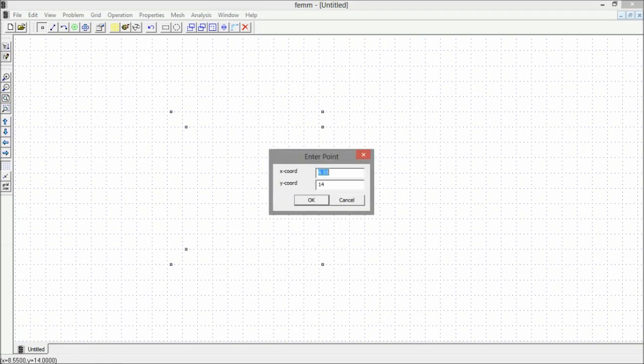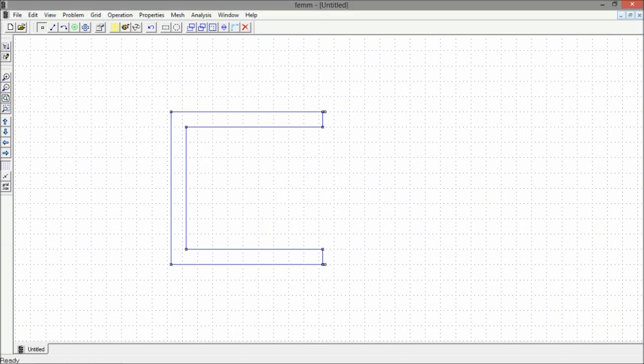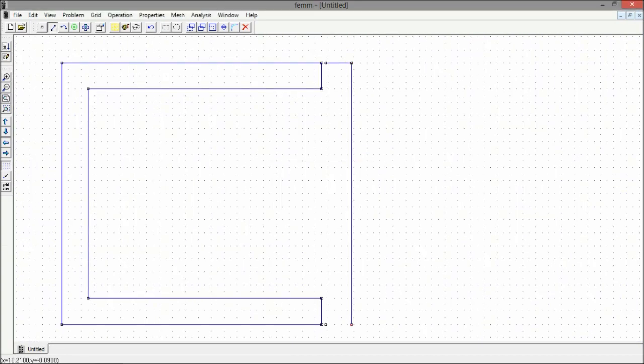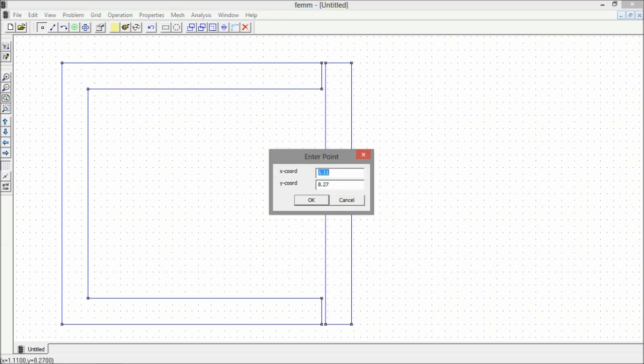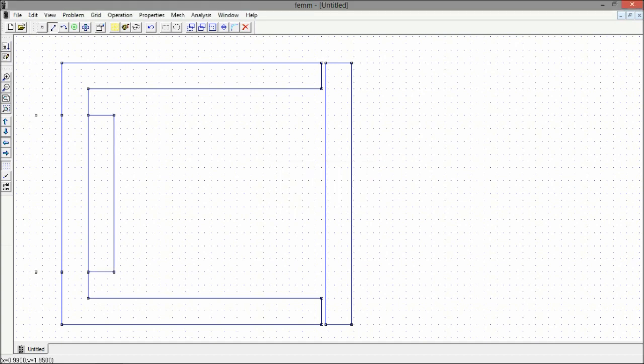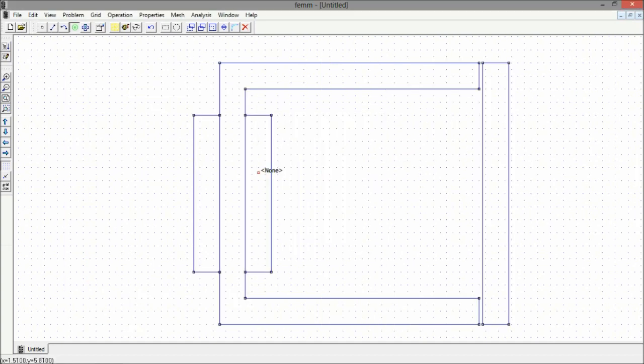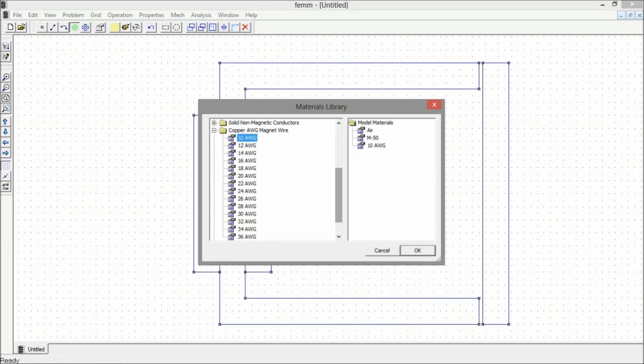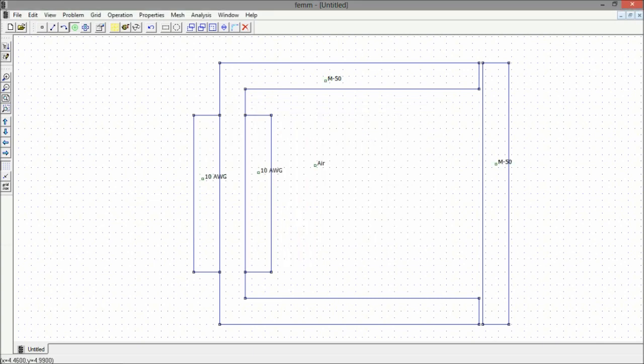We do this by selecting block labels from the toolbar, the green circle, and placing labels in each geometrical area. We then need to select the material and circuit properties we would like to assign, such as air and M50 steel, and copper for the wire. We will also need to define a circuit for the copper wire turns.